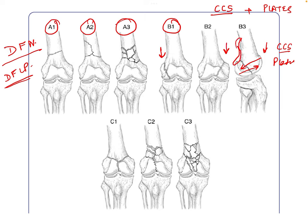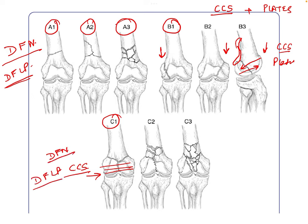In Type C fractures, where the fracture line extends into the articular surface, we must first fix the articular surface with cancellous cannulated screws. After fixing the articular surface, we can fix the metaphyseal region with either a distal femoral nail or, more commonly, a distal femoral locking plate. The same approach applies in C2 — fix the articular surface first, then use a distal femoral nail or locking plate.